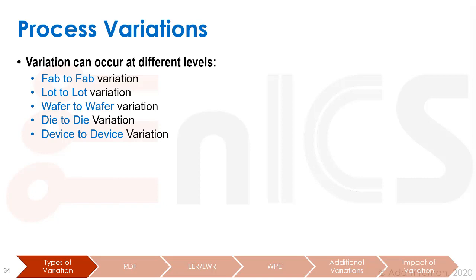Starting at the fab-to-fab variation: if we have a fab in one country, for example in Taiwan, and another one in the US, there are going to be different machines in the fab and different conditions. So a die produced in one fab may have some difference compared to a die produced in another fab, while two of those dies may have similar features.